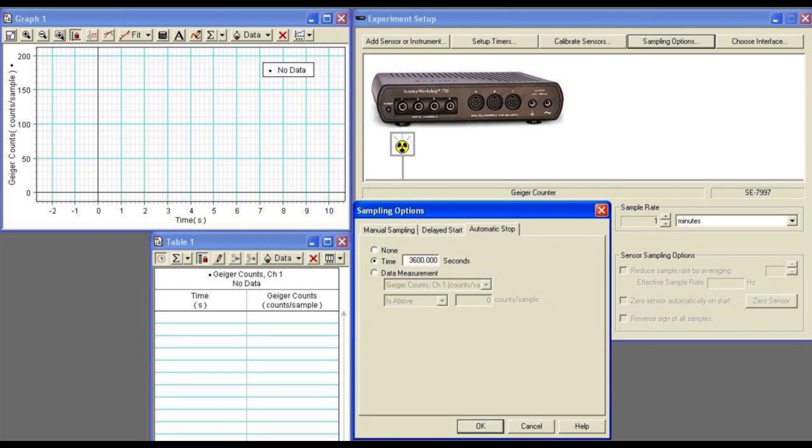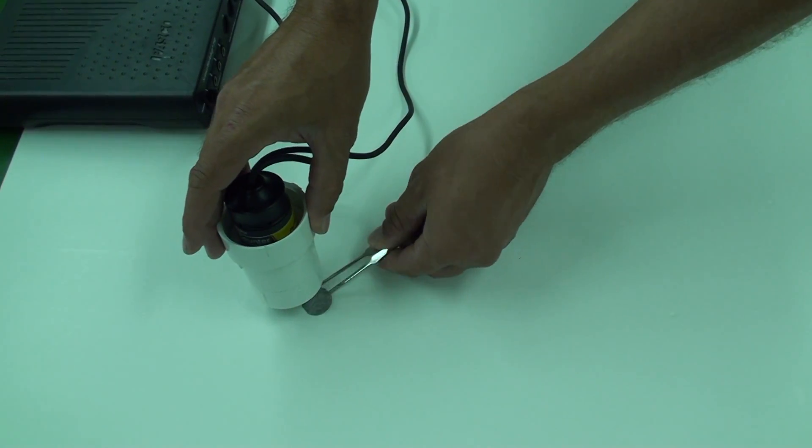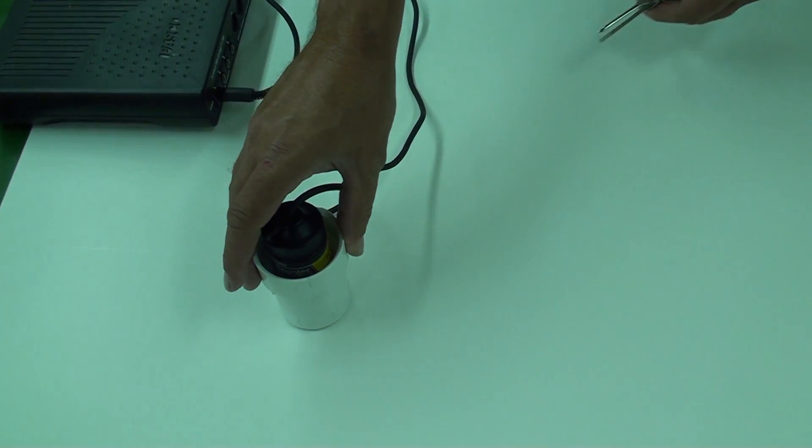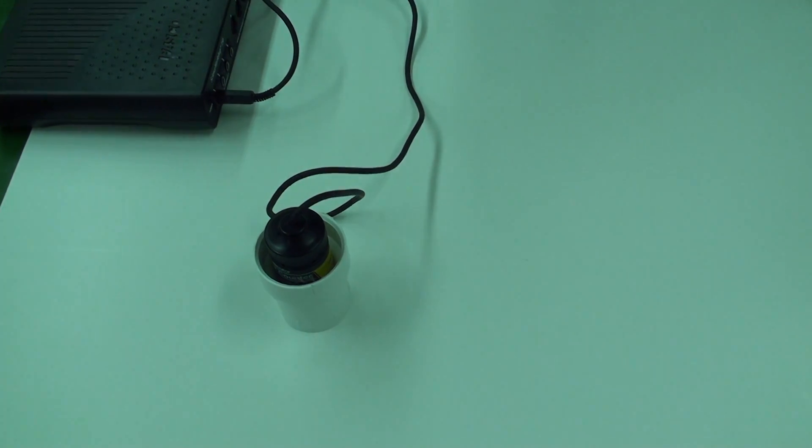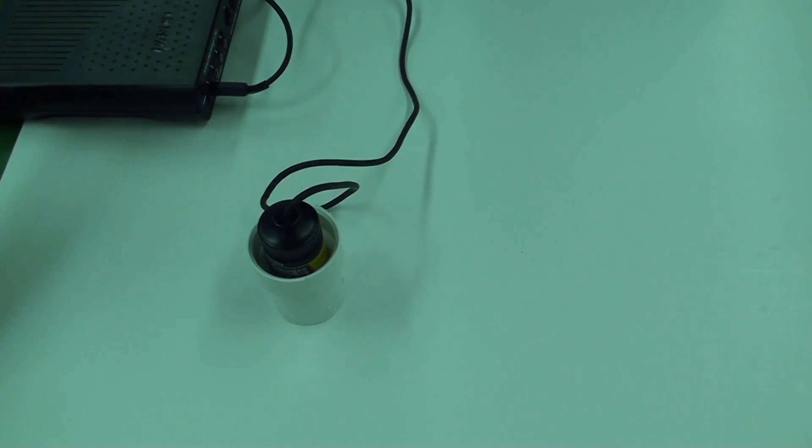The Geiger counter is set to record counts for 1 minute intervals and store and plot the results for 1 hour. Place the sample under the Geiger counter holder and hit the start button for collecting data. For the next hour, do not disturb the sample or detector. You don't want to alter the distance between source and detector.